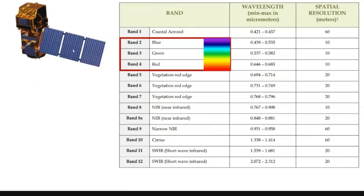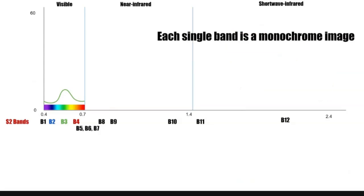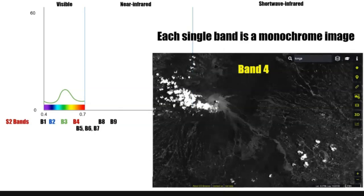When looking at Sentinel-2, for example, there are 13 bands — 12 plus 8 and 8a — at different wavelengths of light across that spectrum. These are the three bands that represent the visible wavelengths of light that we can see, but it collects information beyond that. Any one of these bands — band 1, 2, 3, 4, and so on — captures a certain wavelength of light and is represented as a monochrome image. Here's band four, which represents the visible wavelength of light that we see as the color red — it's a black and white image.